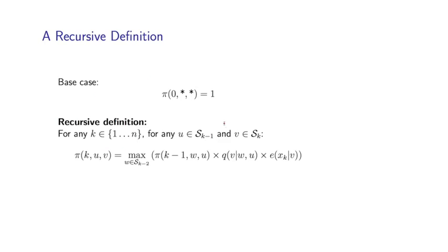So now let's give a recursive definition. The critical idea is going to be that these pi values can actually be calculated efficiently using a recursive definition, which is given on this slide. So firstly, the base case is going to say that pi of 0, star, star is equal to 1. This basically just reflects the fact that every tag sequence starts with star, star at its very beginning.